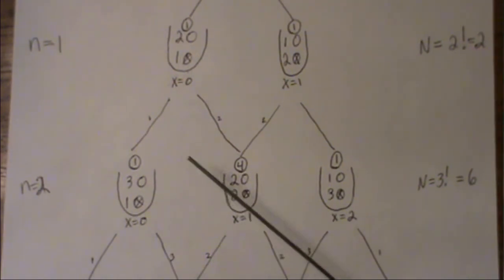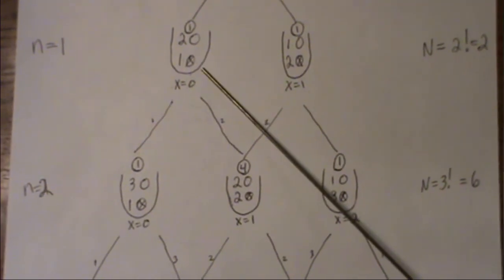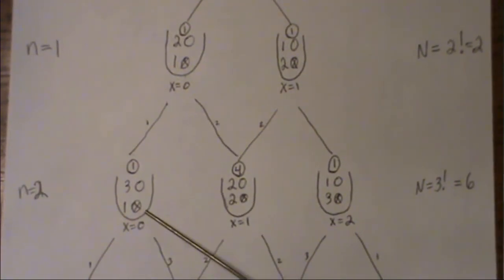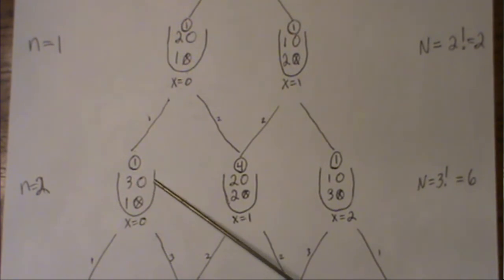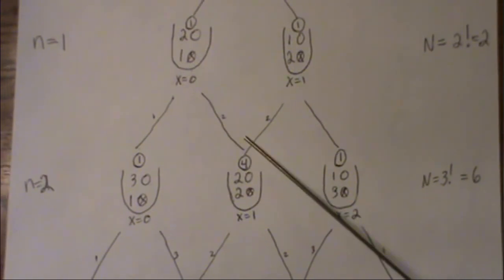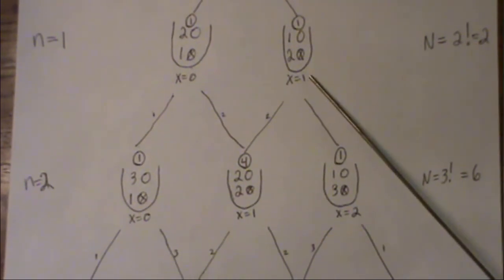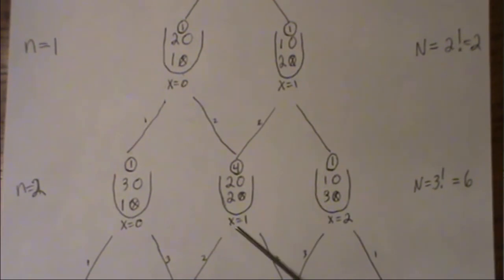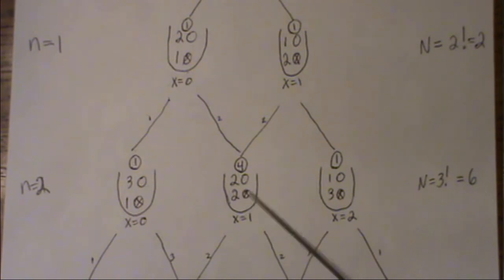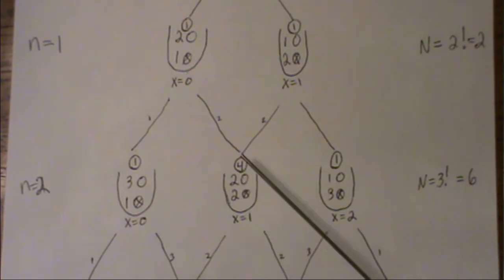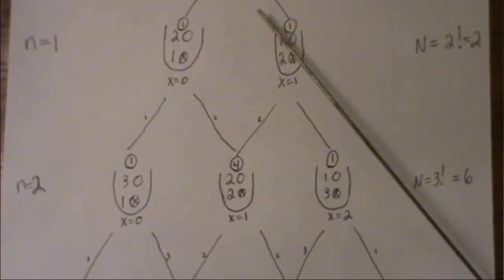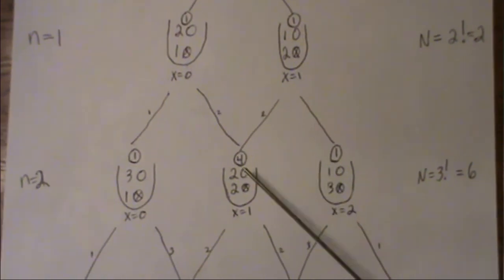After two draws: if our urn drew a black ball, we put it back and replace it with an additional white ball. We could then draw white, or if we'd already drawn a white we could draw black. Either way we've drawn one white ball. The number of ways to get here is four because there are two ways to go down each path — two plus two is four.